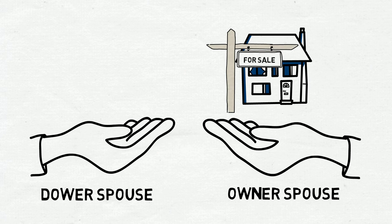This means that the owner spouse cannot sell, mortgage, or transfer the home without the dower spouse's consent. If the owner spouse does this without the dower spouse's consent, they may be subject to a penalty and required to pay damages to the dower spouse.